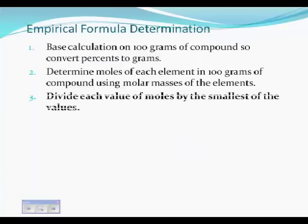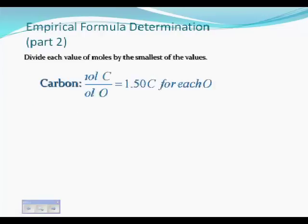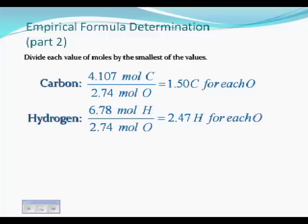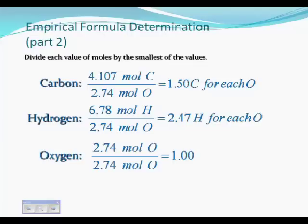Now, once you have that data, we then divide each value of moles that we just calculated by the smallest of all of the values. What do I mean? I mean, we take carbon. And we've got 4.107 moles of carbon divided by the 2.74 moles of oxygen. The 2.74 moles of oxygen was the lowest, and that gives us 1.5 carbon for each oxygen. You do the same for hydrogen, and we discover that we've got 2.47 hydrogen for each oxygen. Now, I'm going to round that probably to 2.5. After all, this is experimental data. And finally, oxygen, of course, comes out to be 1.